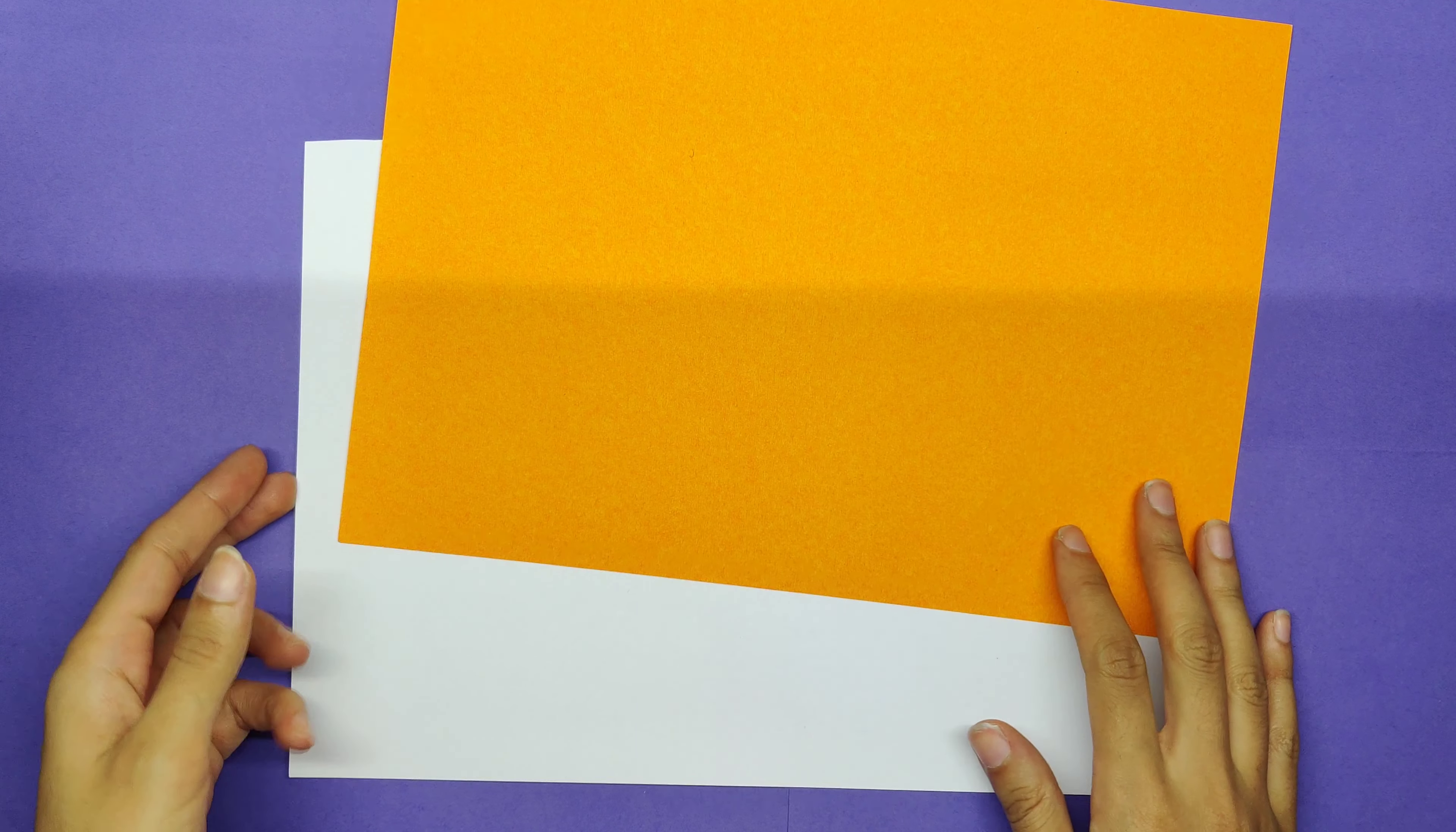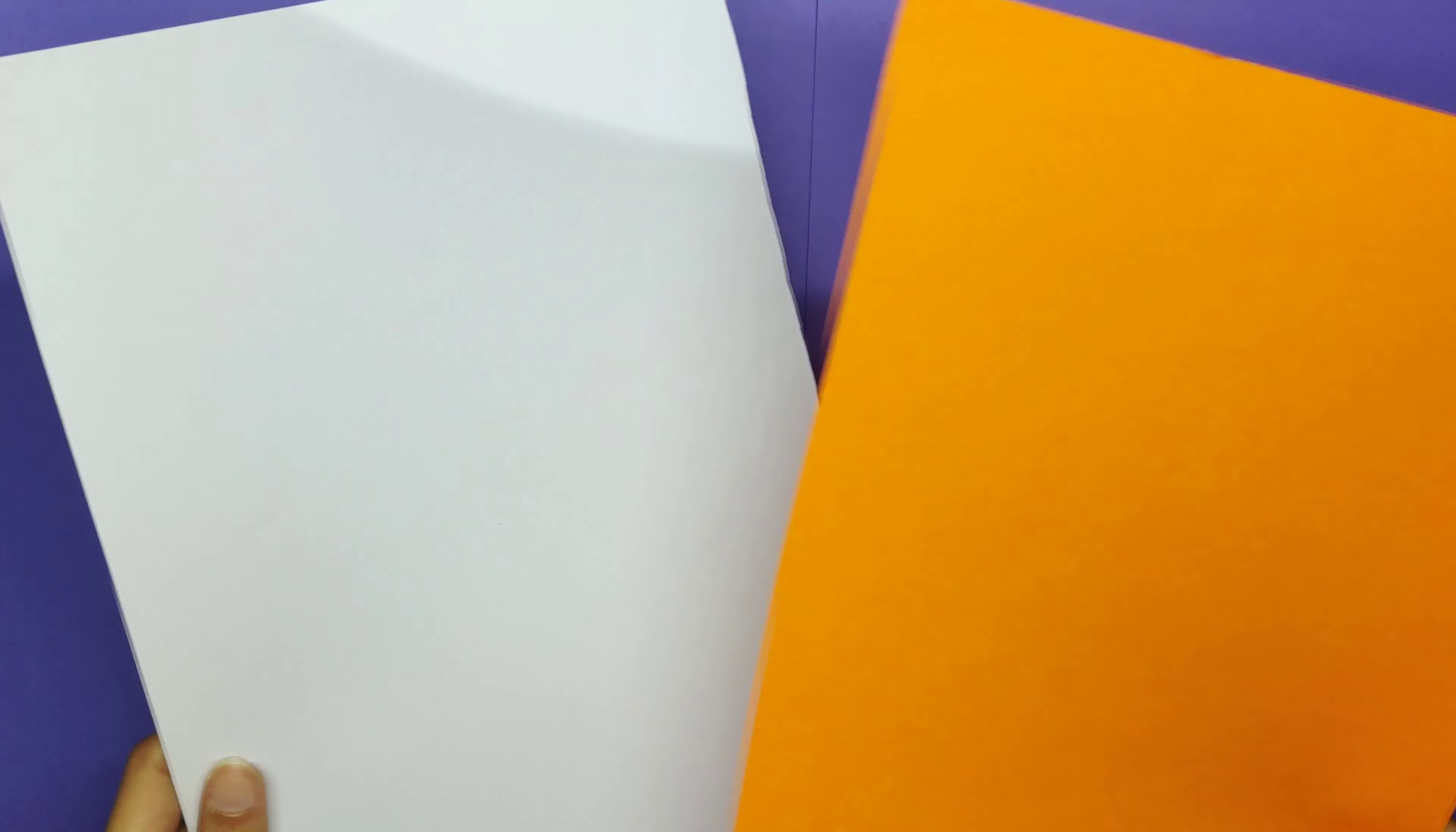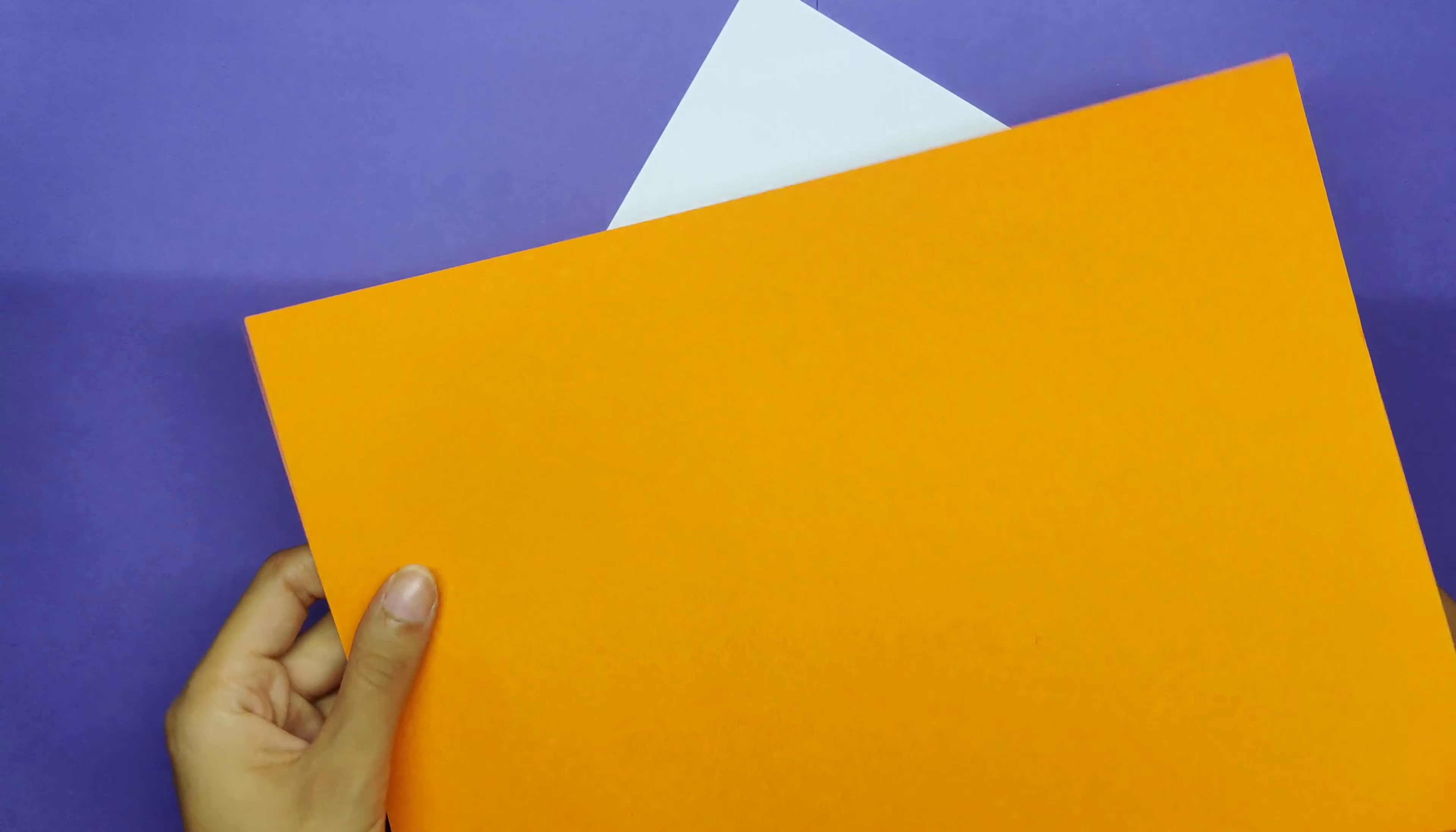You will need also scissors and a marker. Now usually you ask me, Miss Iman, can I use a different color? Can I pick a different color? And the answer is yes, sure you can. Pick any color you want. You can also use origami paper. Here I'm using construction paper but you can use also origami.